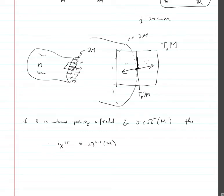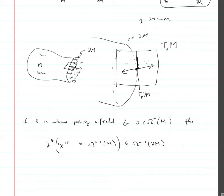And then we can pull this back to the boundary, and this will be an n-1 form on the boundary, and this will be a volume form on the boundary of m.